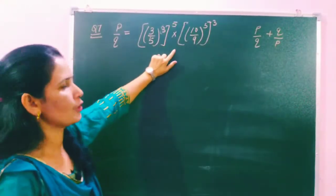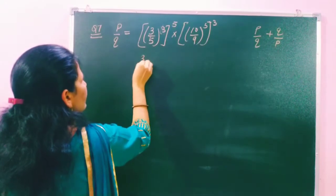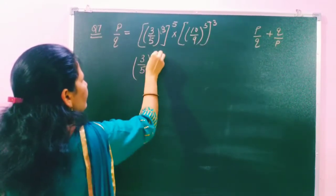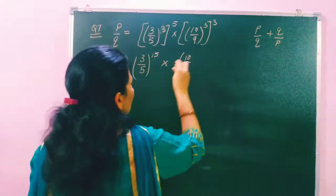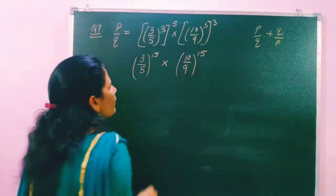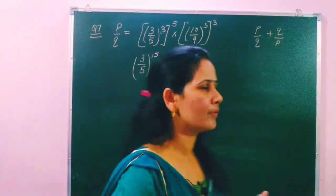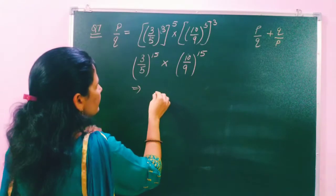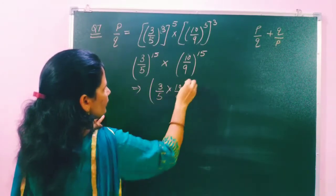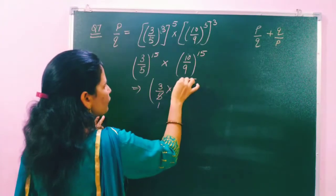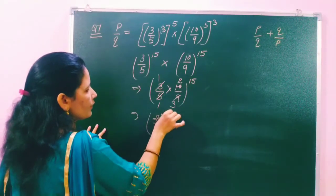First we have to solve this value of pq, and from here find pq. If we solve: 5×3 is 15, so (3/5) power of power is 15. Similarly for (10/9), power of power is 15 — 5×3 is 15. Now, if the bases are different and powers are the same, we multiply the bases: (3/5) × (10/9), all raised to the power 15. So 5×2 is 10, 3×3 is 9, giving us (2/3)^15.